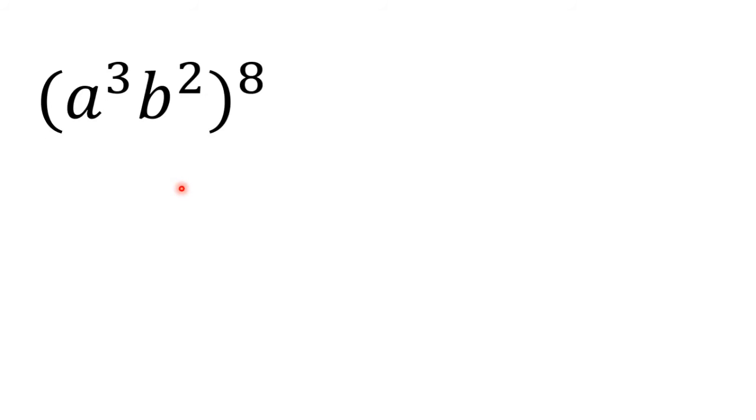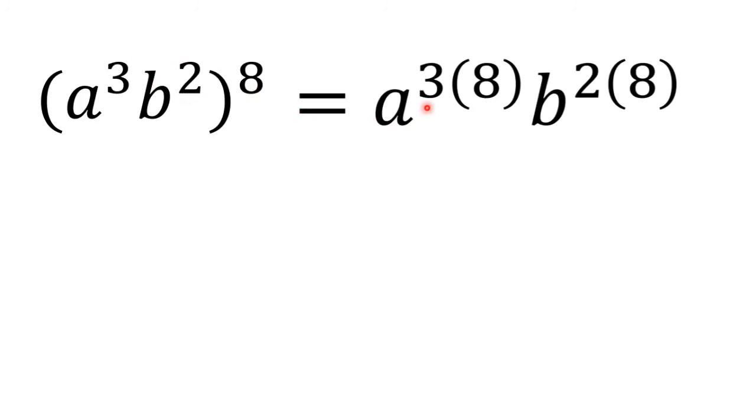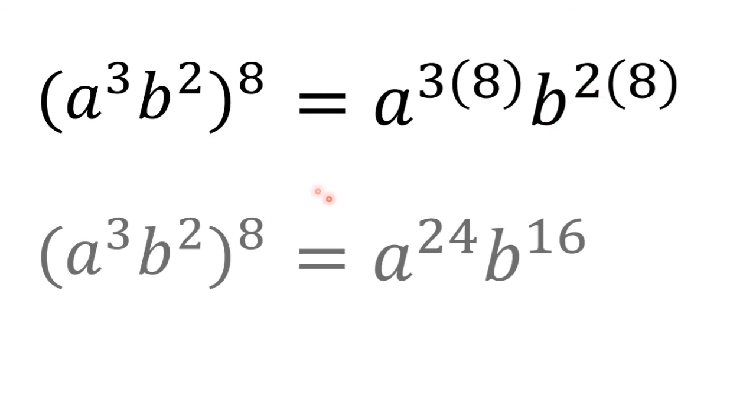Next example: a power of 3, b power of 2, quantity power of 8. To answer this, we must distribute power of 8 and multiply it by power of 3 and 2. Equals a power of 3 times 8, b power of 2 times 8. So our final answer is a power of 24, b power of 16.